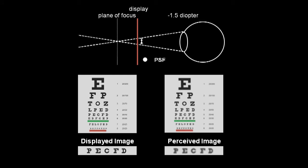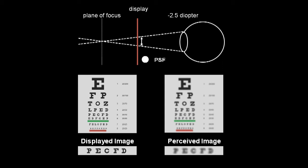Optically, this is represented by a point spread function that increases in diameter. We model the blurring process as a convolution of the displayed image with the point spread function.